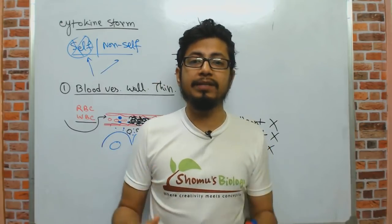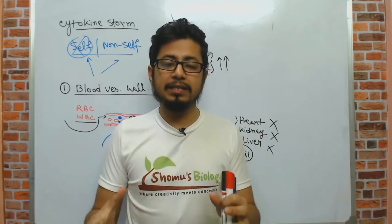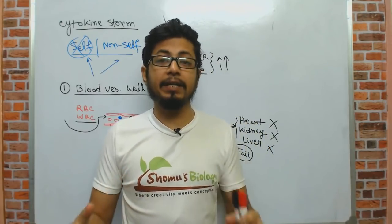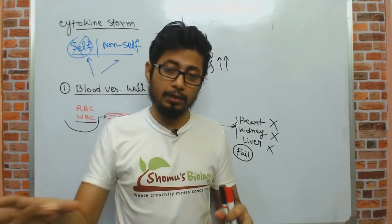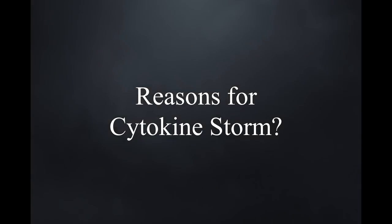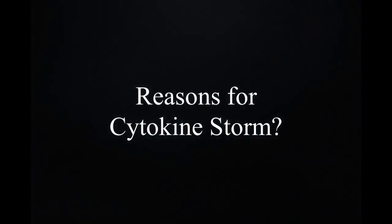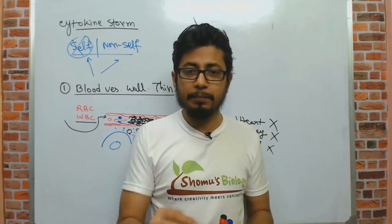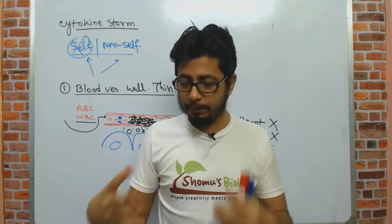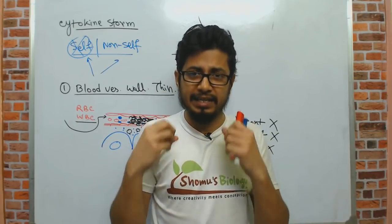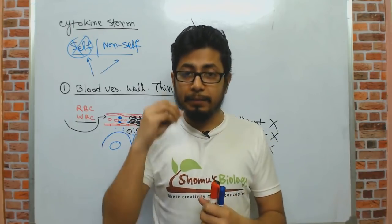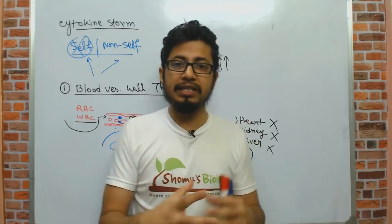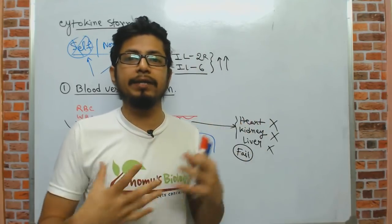As a result, the heart stops receiving blood, the kidney stops receiving blood, the liver stops receiving blood — and all these organs begin to fail. Ultimately, cytokine storm leads to multi-organ failure. This is what is happening with many COVID-19 patients.